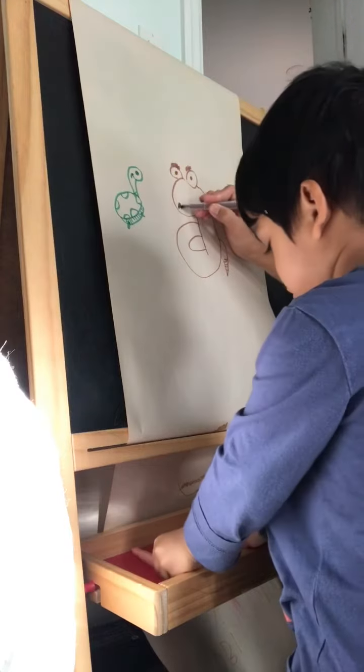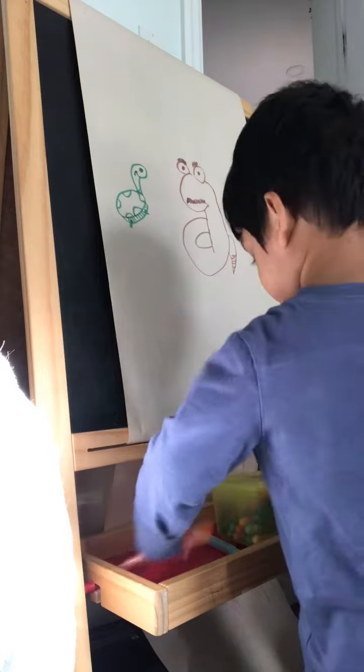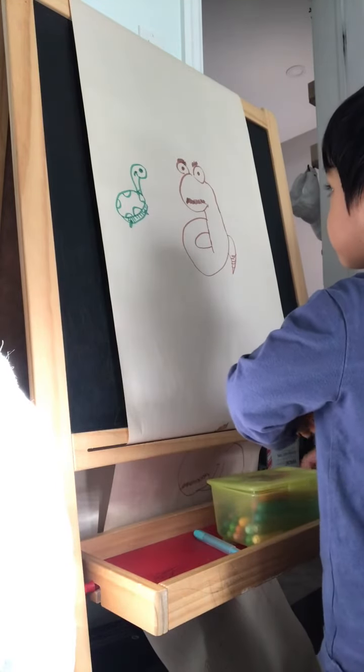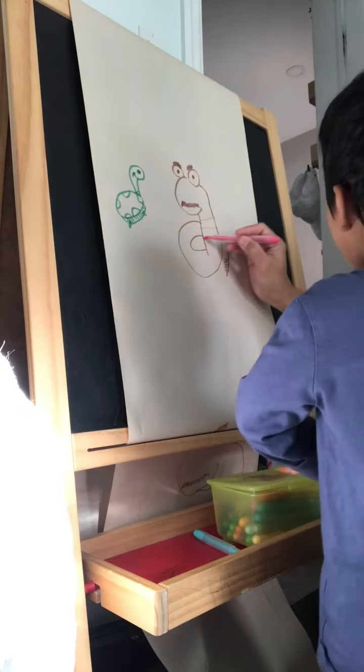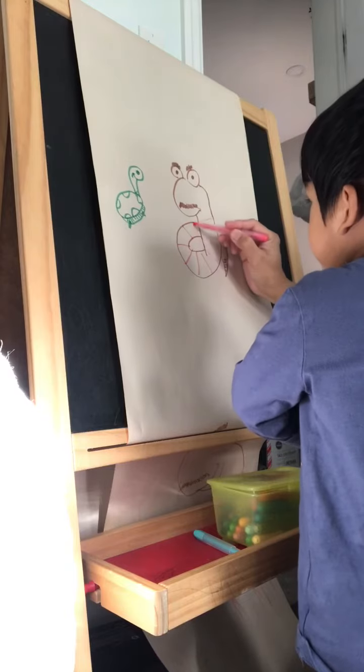Put some mustache on the worm. Is that a teenager worm? It's an adult. Adult worm. So we're gonna put some pink stripes on the worm. It doesn't have a mustache, okay.